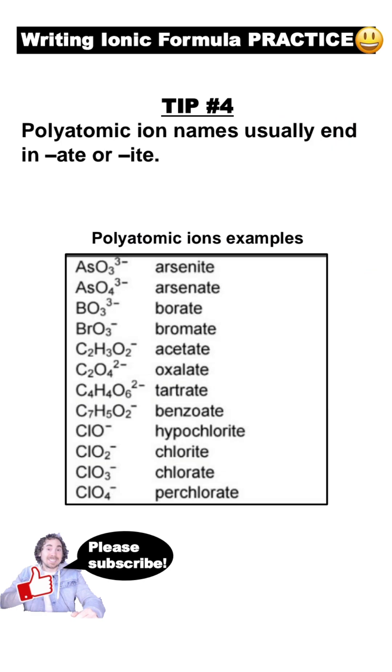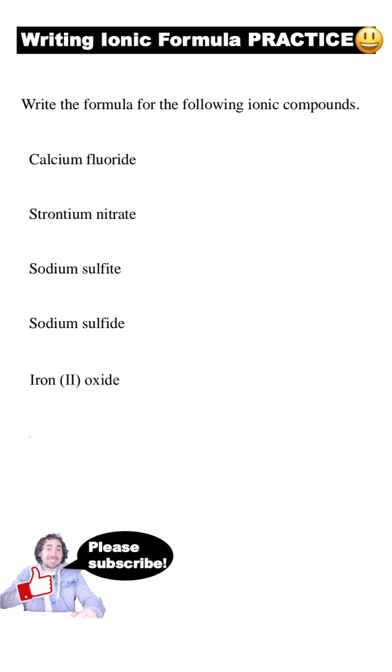Finally, sometimes a single ion is made up of multiple elements. We call these a polyatomic ion. You recognize a polyatomic ion by its name because they usually end in ate or ite. So let's write some formulas for these names.